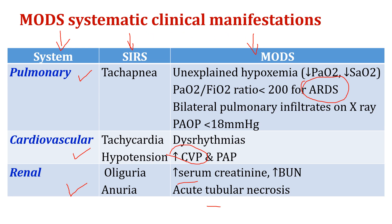To summarize how MODS affects all body systems, you will find in this table each organ system — pulmonary, cardiovascular, and renal. The second column shows the clinical manifestations common among patients with systemic inflammatory response syndrome, and the third column shows the common clinical manifestations for each body system in patients who developed multiple organ dysfunction syndrome. You must remember all these clinical manifestations, signs, and symptoms.